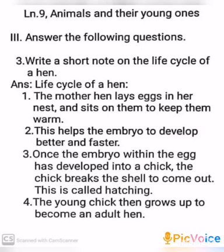Repeating the answer: Life Cycle of a Hen. First point: the mother hen lays eggs in her nest and sits on them to keep them warm. Second: this helps the embryo to develop better and faster. Third: once the embryo has developed into a chick, the chick breaks the shell to come out — this is called hatching. Fourth: the young chick then grows up to become an adult hen.